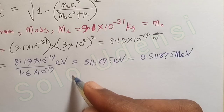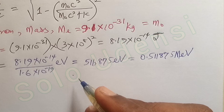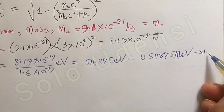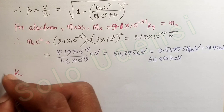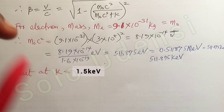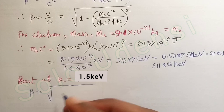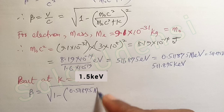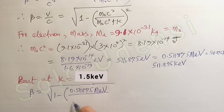If we want to put it in kilo electron volts, that is 511.875 keV. Now, for beta, we compute the square root of 1 minus (0.511875 MeV over 0.511875 MeV plus K) all squared.